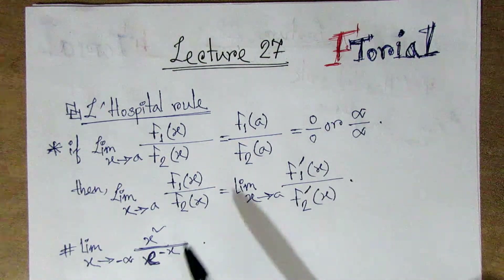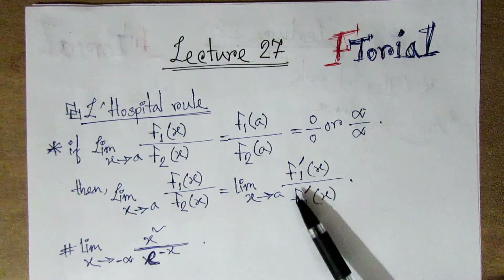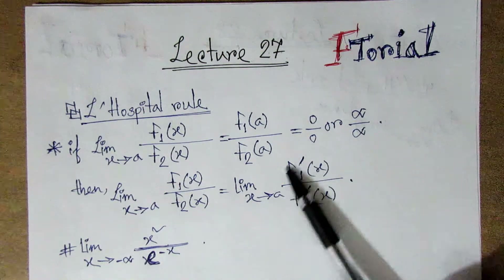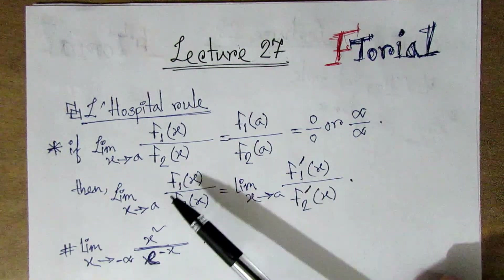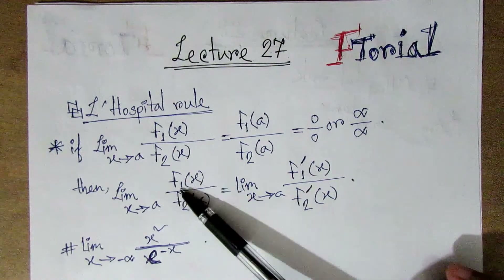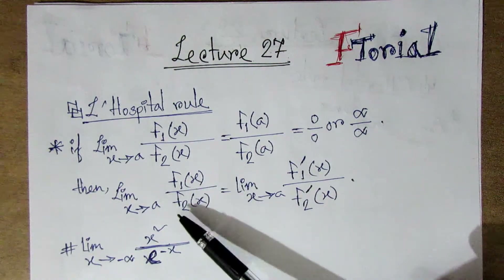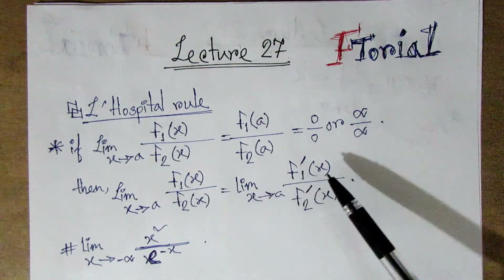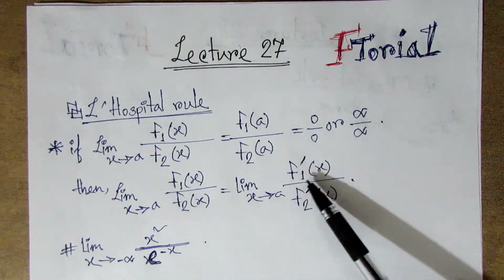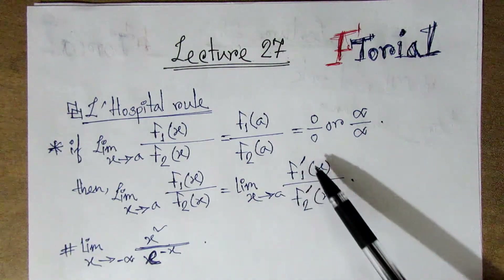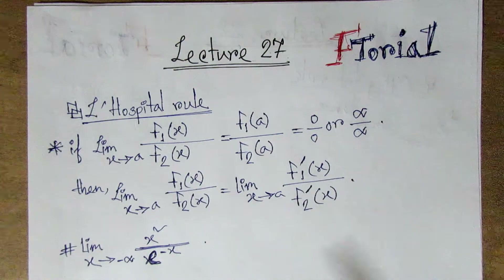So we will differentiate. We will be able to differentiate so that f1(x) divided by f2(x) is equal to the limit of f'1(x) divided by f'2(x).